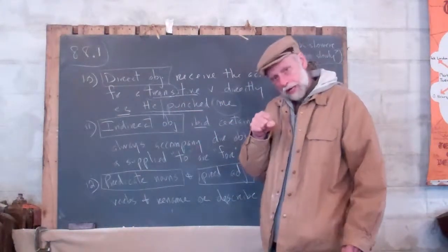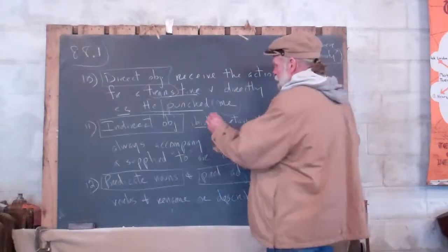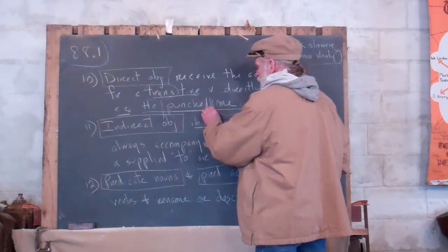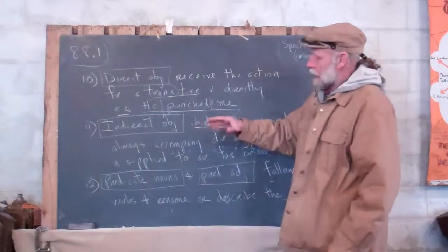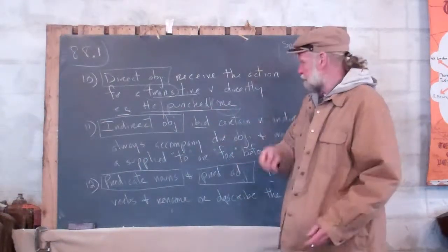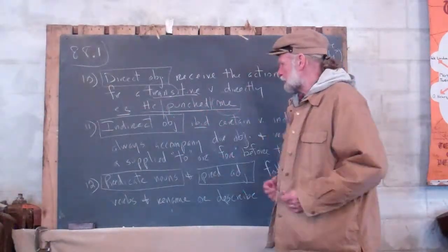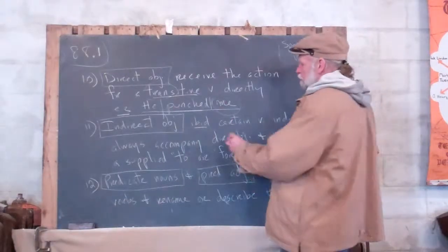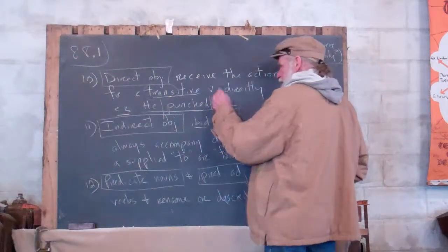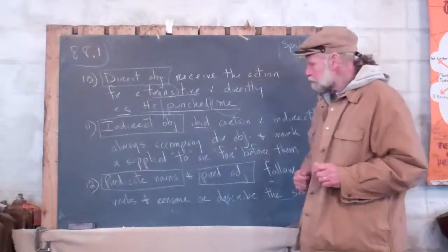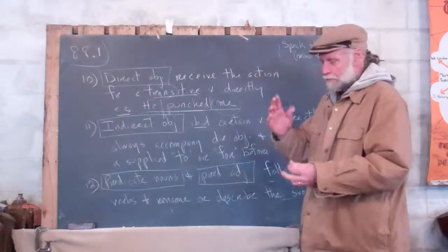He punched me - the action of the punch came to me. It landed on, say, my nose. I'll diagram this again in a second video. But here's the way you would diagram a direct object. You have a vertical line. There is the direct object. And it, of course, would be a compound.